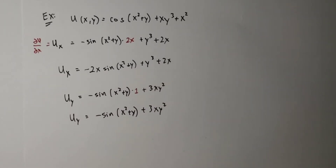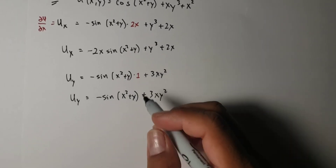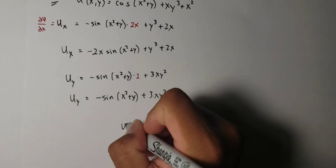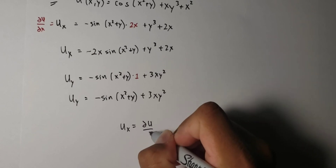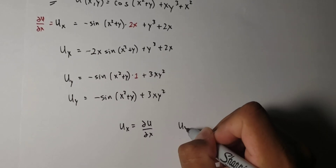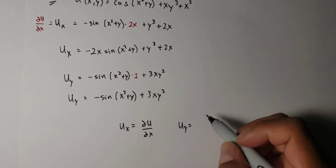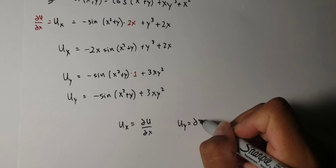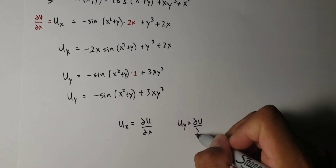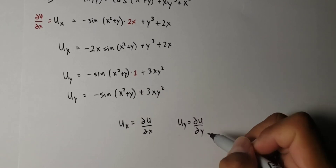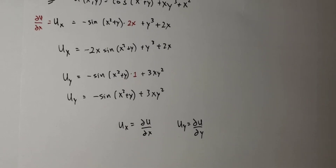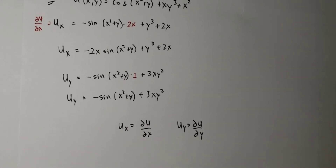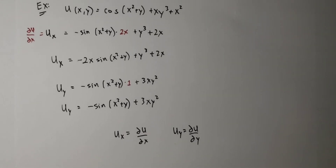That's basically it for this video. I just want to make sure we understand the notation: u_x is the same thing as del u del x, and u_y is equal to del u del y. Hope that helps — if you liked this video or found it helpful, please like, subscribe, and I'll see you next time.